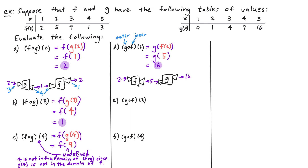Next let's try example e: g composed with f of 3. By definition this is g of f of 3. We start with the inside and figure out f of 3. Going to the table for f, when the input is 3 the corresponding output is 4. So f of 3 is equal to 4. Next we compute g of 4. Looking at the table for g, when the input is 4 the output is 9. So g of 4 is equal to 9, and that is the answer to our composition.